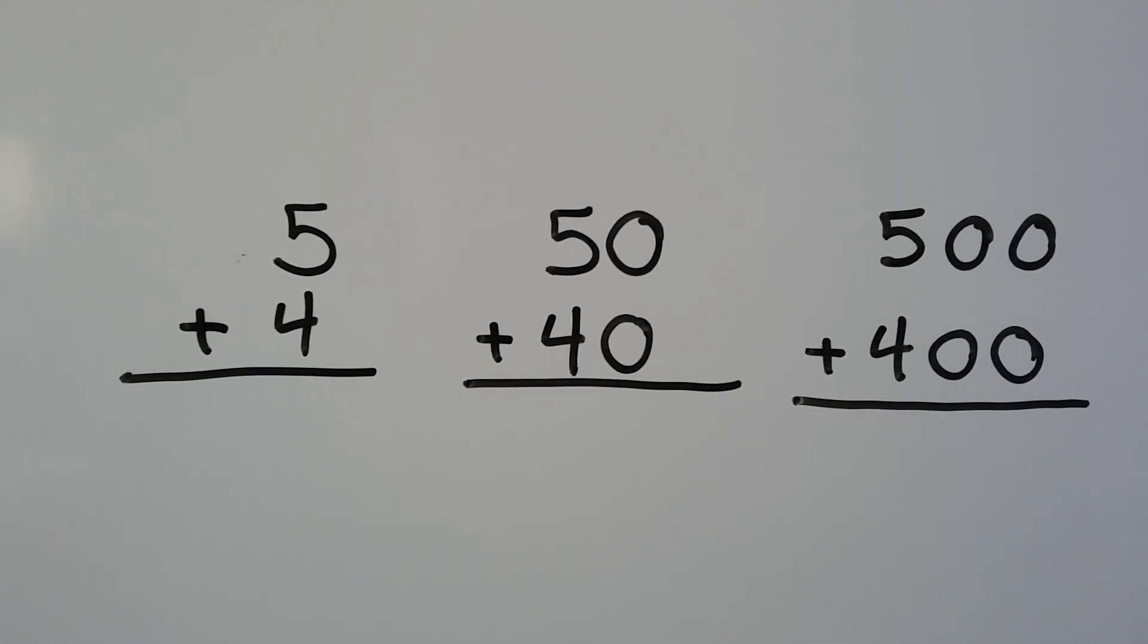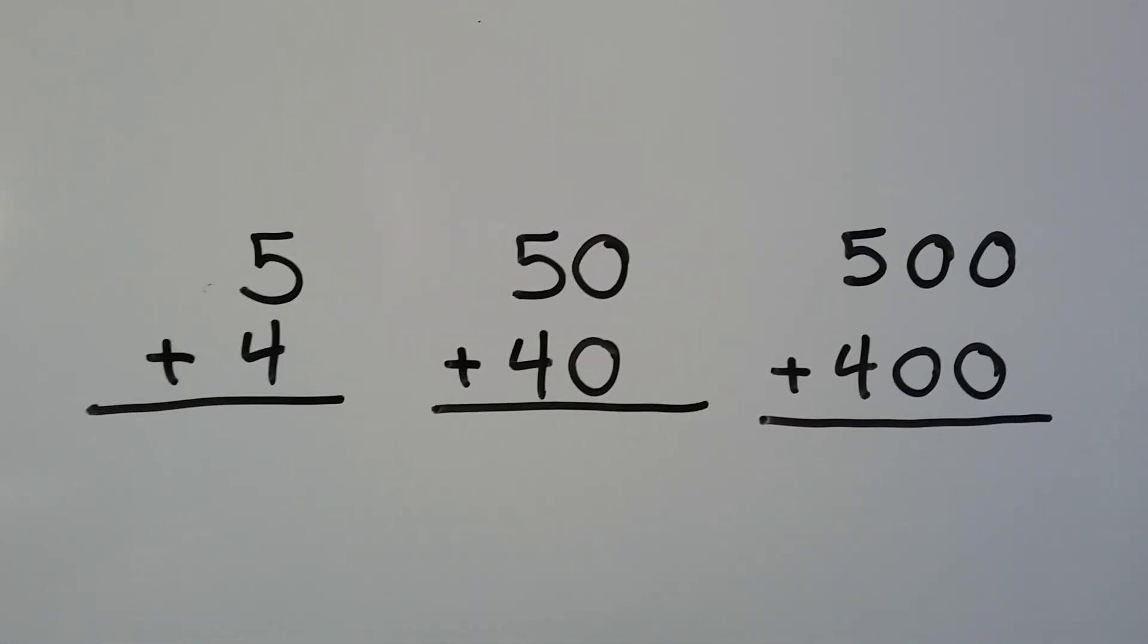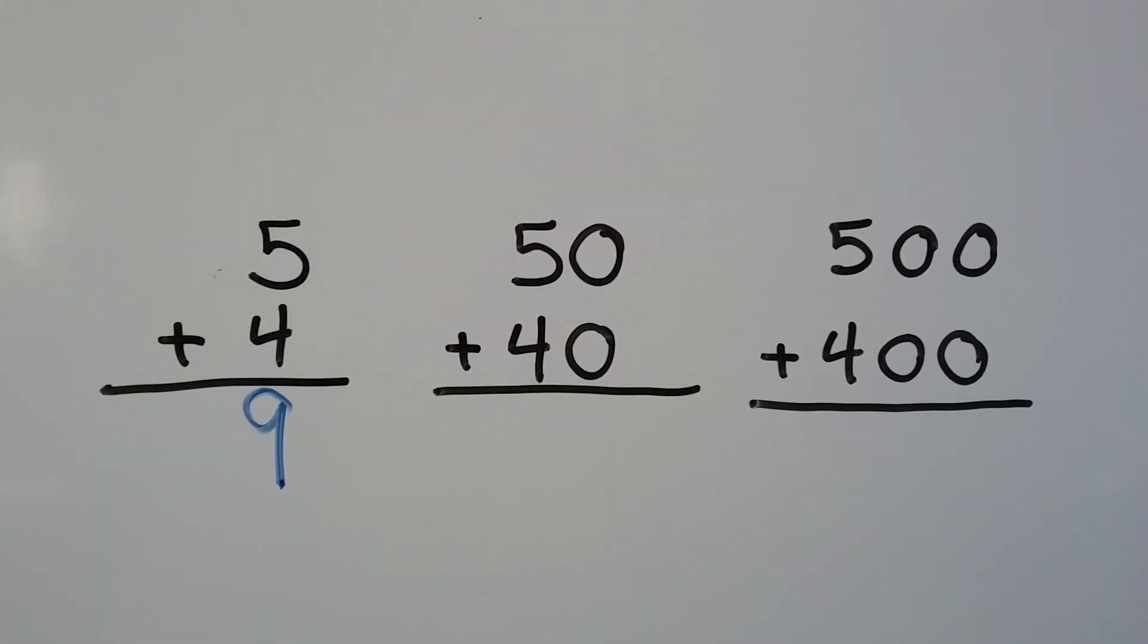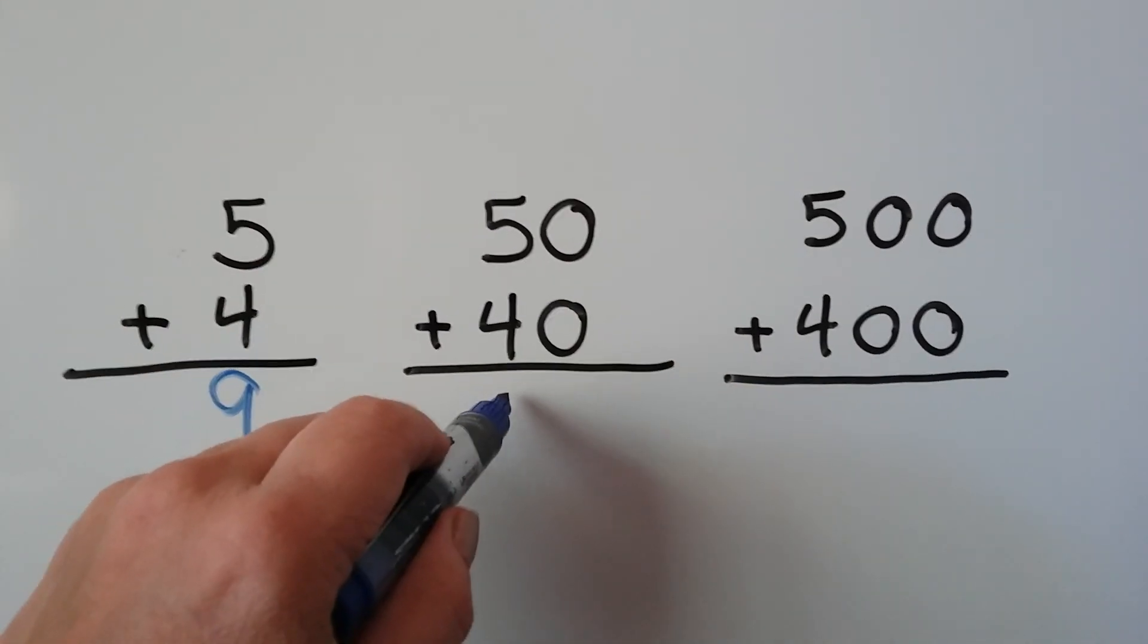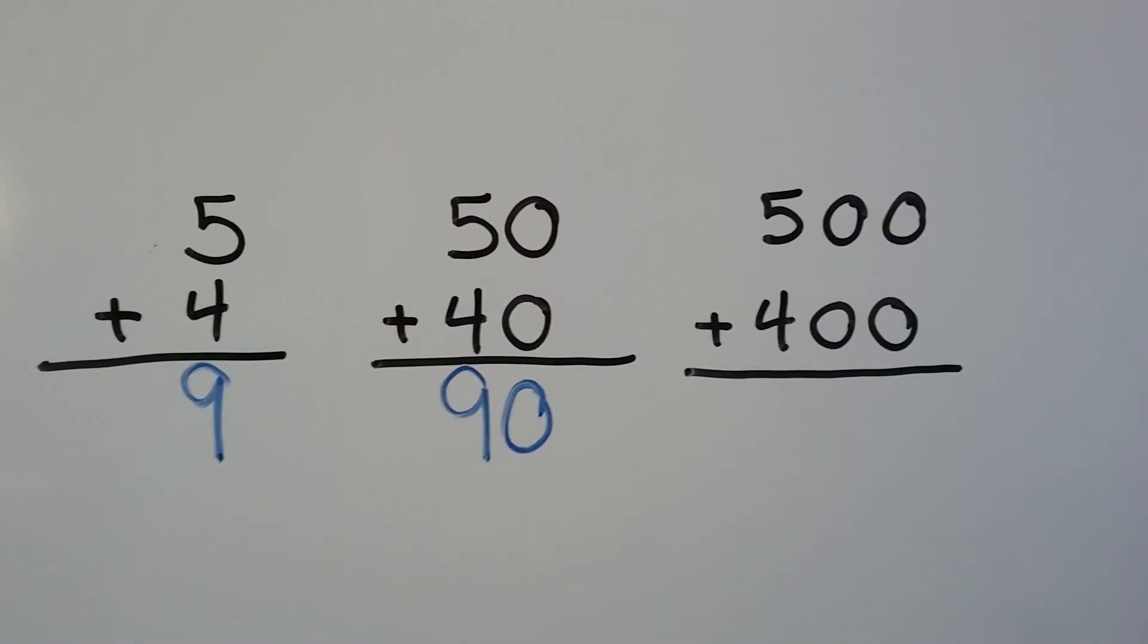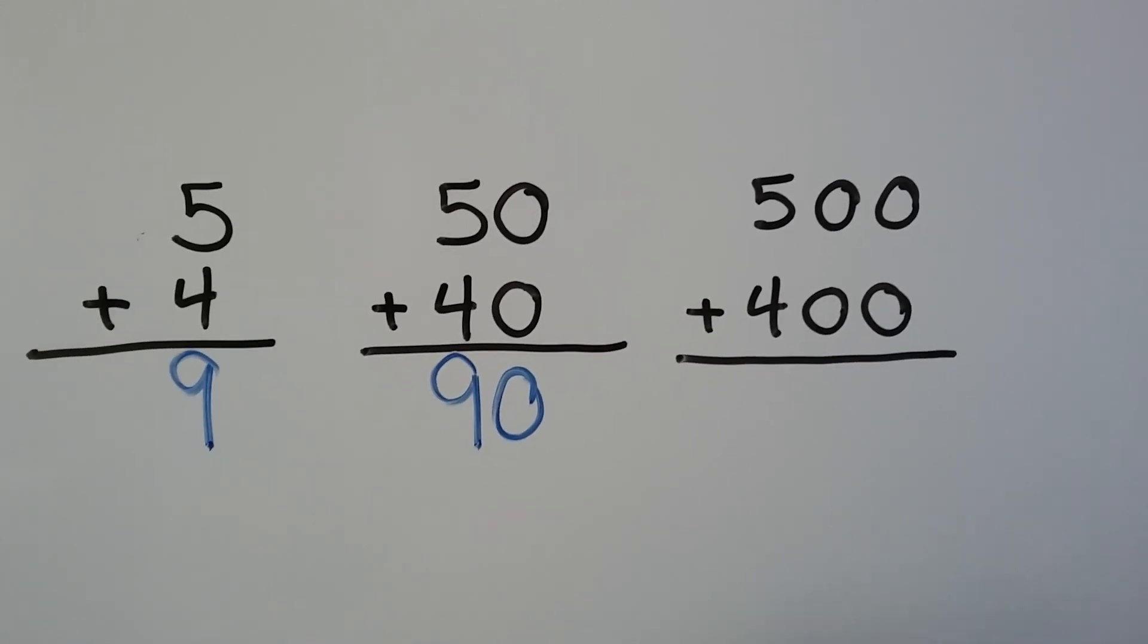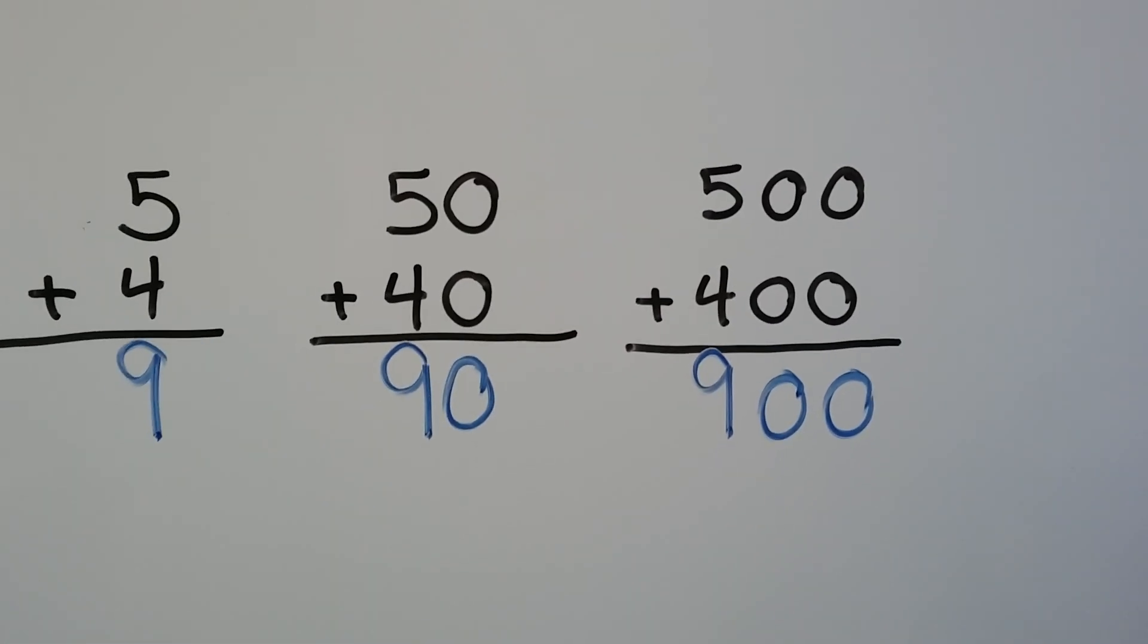5 plus 4. Do you remember 5 plus 4 by heart? 5 plus 4 is 9. So, 50 plus 40 would be, we do the 5 plus 4, which is 9, we just add a zero. 500 plus 400, we would just do the 5 plus 4, which is 9, and we add two zeros.